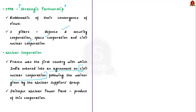The NSG waiver allows for the resumption of civilian nuclear commerce with India, enabling India to resume full civil nuclear cooperation with the international community. The Jaitapur Nuclear Power Plant is a product of this cooperation.